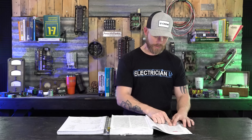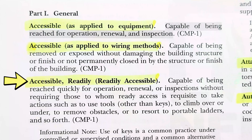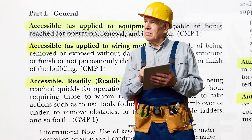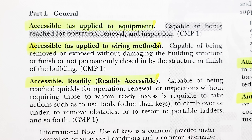Next up we have 'readily accessible.' In code it's still under the A's — 'accessible, comma, readily.' Readily accessible means capable of being reached quickly for operation, renewal, or inspections without requiring those to whom ready access is requisite — like an inspector or someone who works at a place — to take actions such as use tools other than a key to open something.